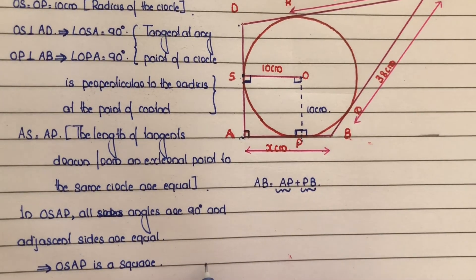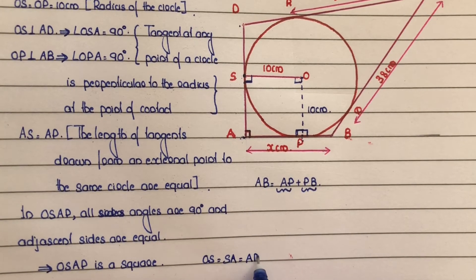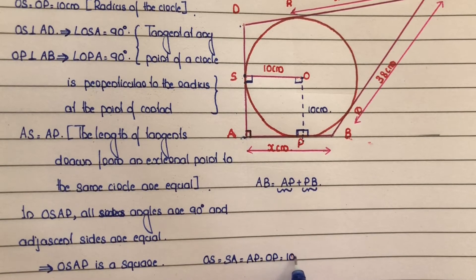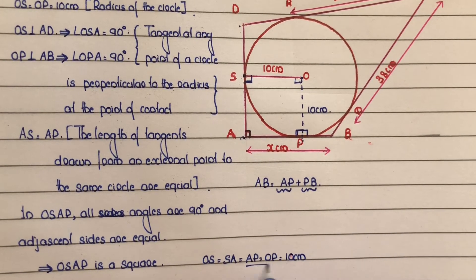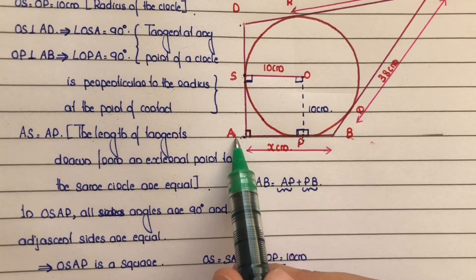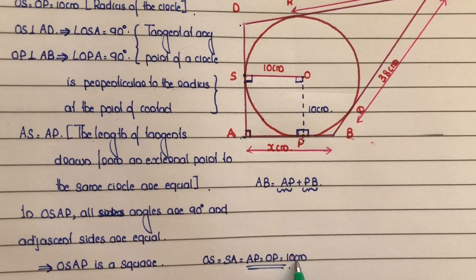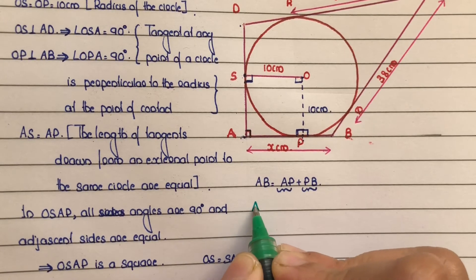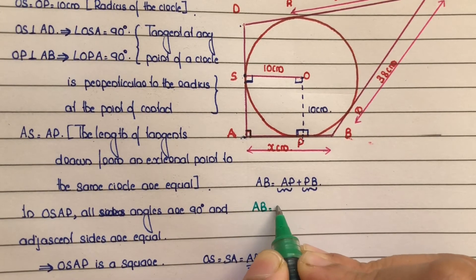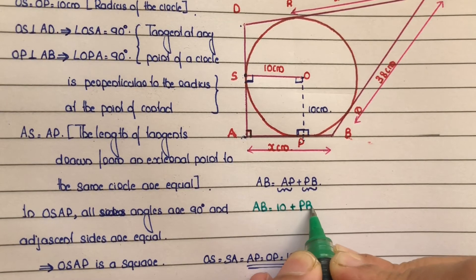In OSAP, all angles are 90 degrees and adjacent sides are equal, which implies OSAP is a square. Since all sides of a square are equal, X equals OS equals SA equals AP equals OP equals 10 centimeters. So AP equals 10 centimeters, and therefore AB equals 10 plus PB.